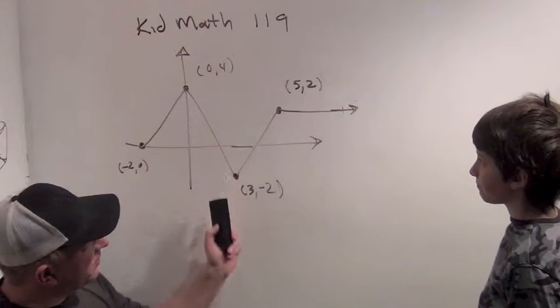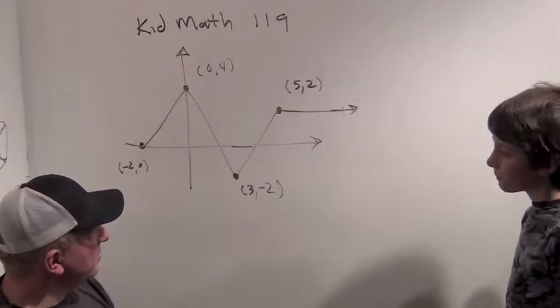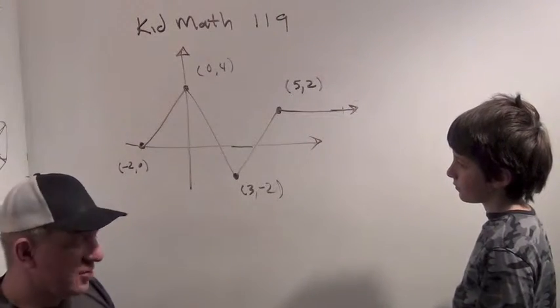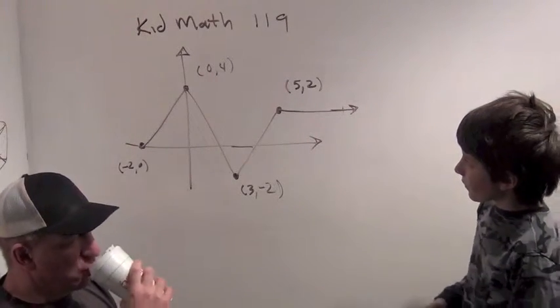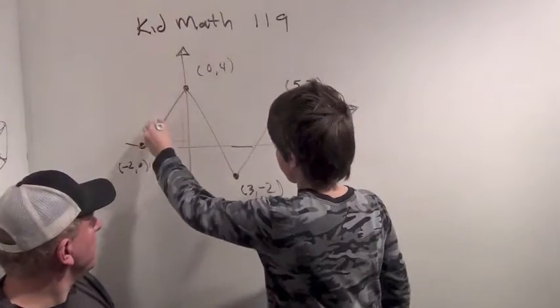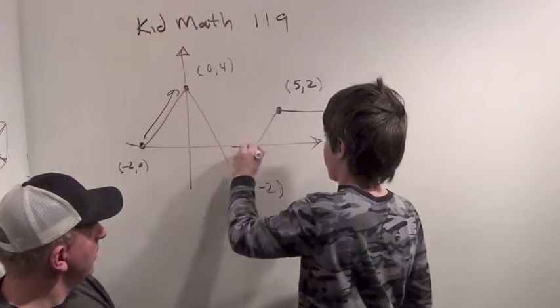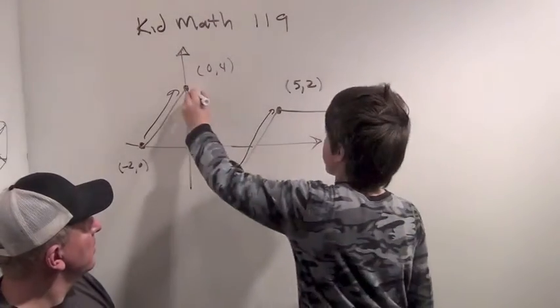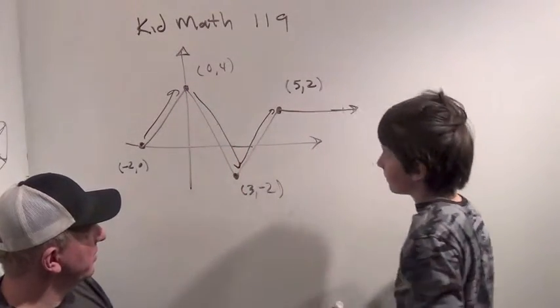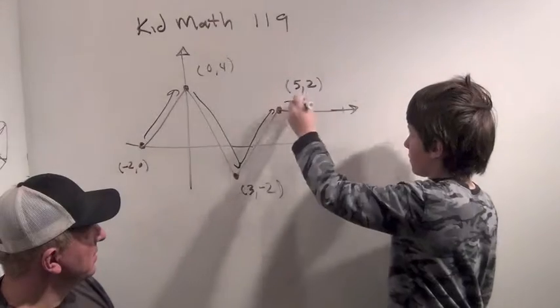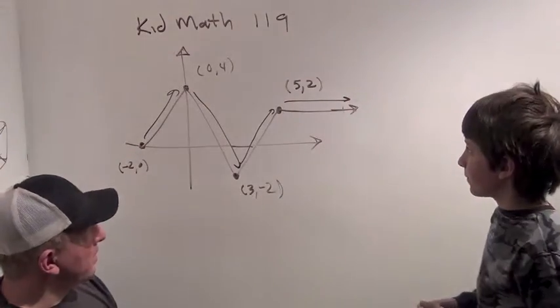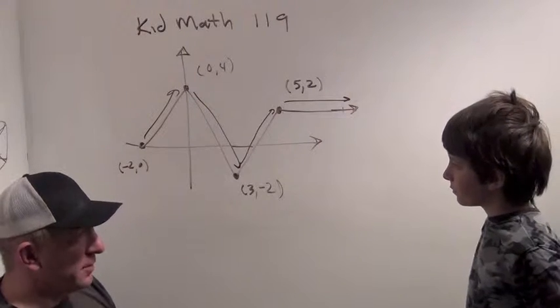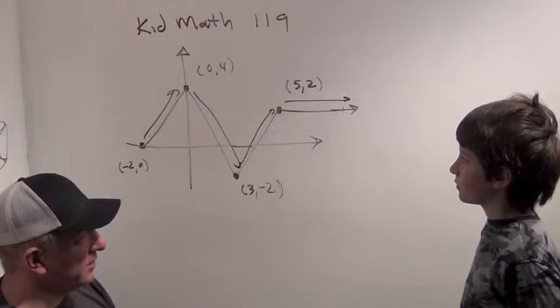So, suppose we have a function that's graphed like this. Can you tell me where is this function increasing? Well, it's increasing here and here. Okay, where is it decreasing? It's just decreasing here. Okay, and where is the function constant? This one. Alright, very good. So you can identify where it's increasing and decreasing just by looking at it, right? Yeah.